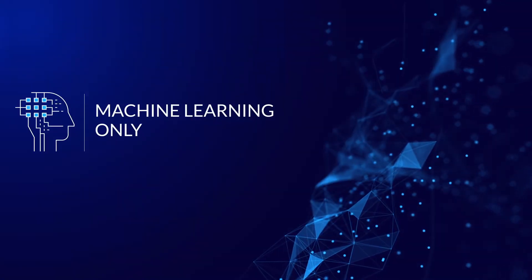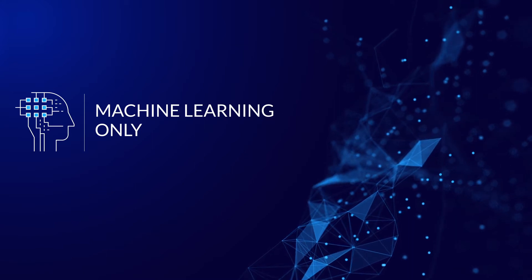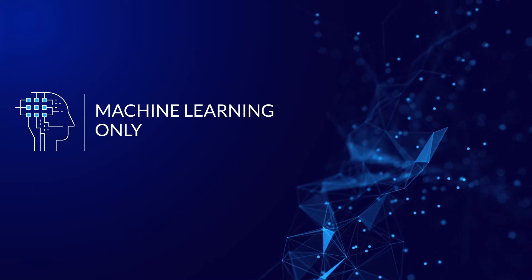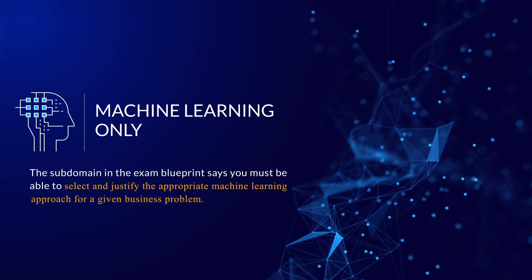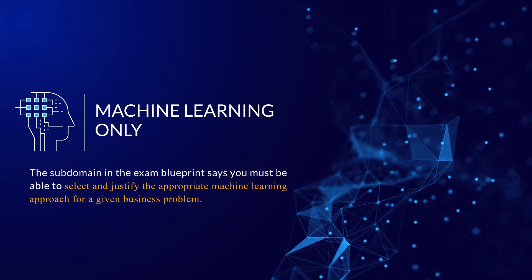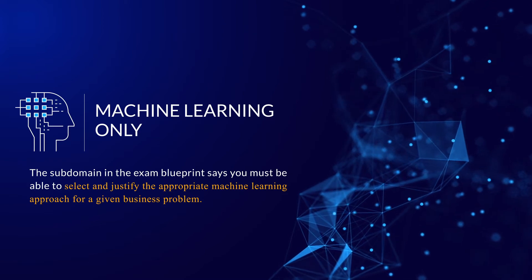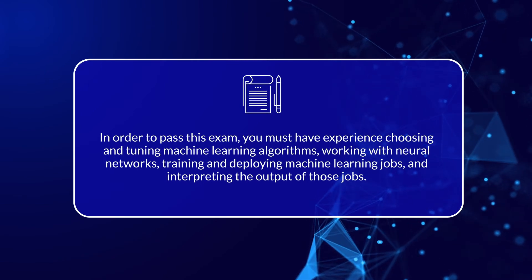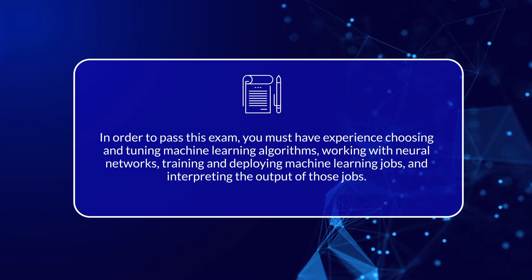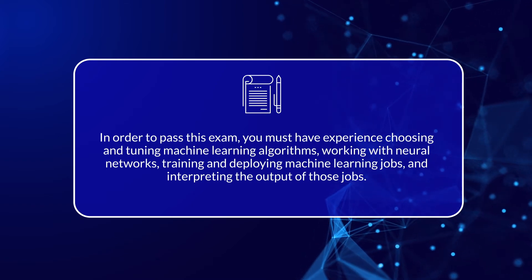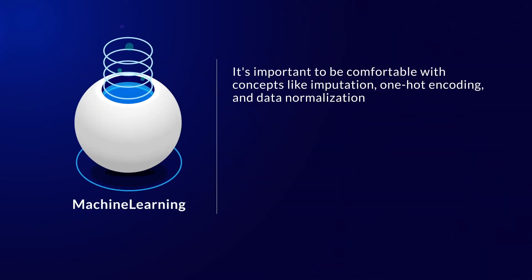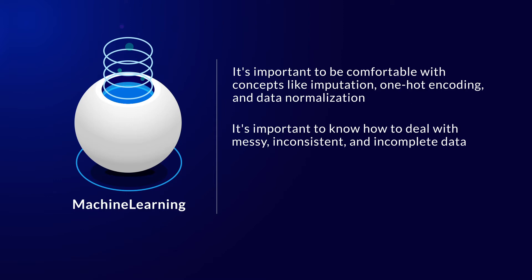Another third of the exam's questions were solely about machine learning and had nothing to do with the AWS cloud or related technologies. For me, these were the hardest questions because, even though I've helped people run machine learning workloads over the years, I'm not a data scientist. The exam blueprint says you must be able to select and justify the appropriate machine learning approach for a given business problem — and they were not kidding. In order to pass this exam, you must have experience choosing and tuning machine learning algorithms, working with neural networks, training and deploying machine learning jobs, and interpreting the output of those jobs. It's important to be comfortable with concepts like imputation, one-hot encoding, and data normalization, and to know how to deal with messy, inconsistent, and incomplete data.